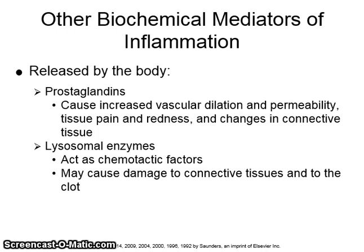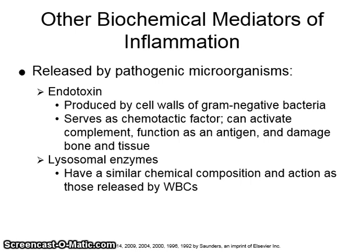Other biochemical mediators of inflammation released by the body are prostaglandins and lysosomal enzymes. Prostaglandins cause increased vascular dilation and permeability, tissue pain and redness, and changes in connective tissue. Lysosomal enzymes act as chemotactic factors and may cause damage to connective tissues and to the clot. Endotoxin is produced by the cell walls of gram-negative bacteria; it serves as a chemotactic factor, can activate complement, function as an antigen, and damage bone and tissue.